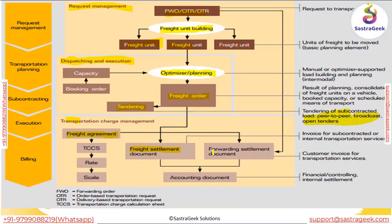Once you have the charges, you can do a freight settlement. Settlement works both ways — first is the forwarding order settlement and second is the freight order settlement. From the forwarding order a forwarding settlement document is created, and from the freight order a freight settlement document is generated. These are then sent to ECC for accounting. The forwarding settlement document is always settled with a billing document, and the freight settlement document is always settled with a...